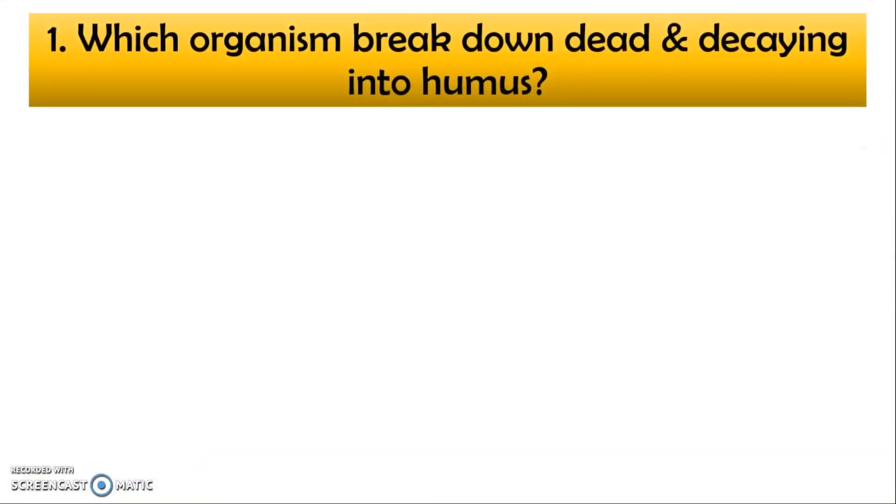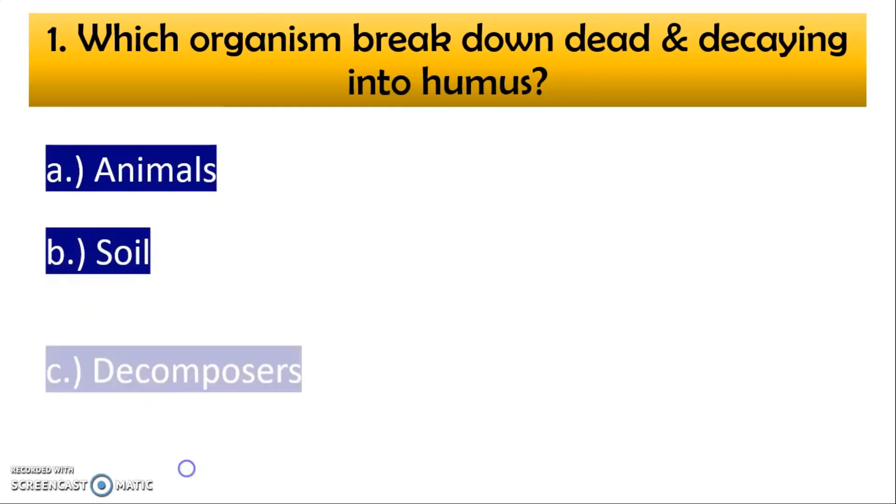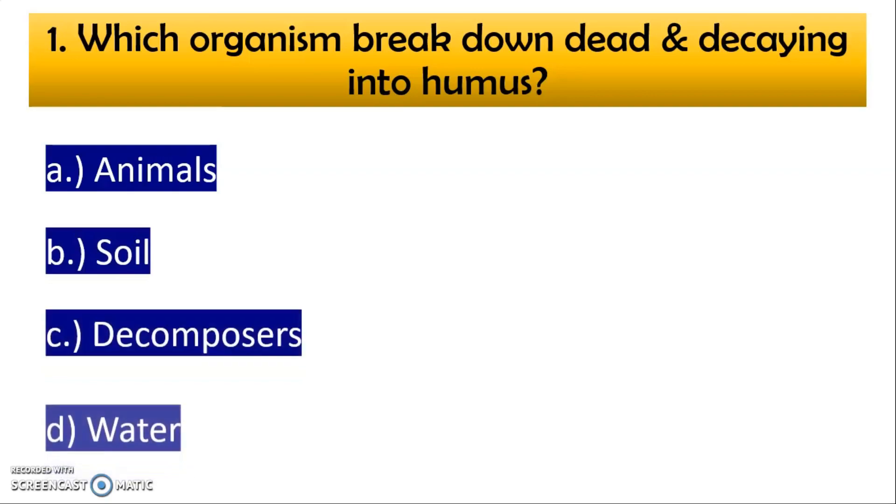So first question is, which organism breaks down the dead and decaying material into the humus? First option is animals, second soil, third decomposers and fourth water. So correct answer is decomposers.